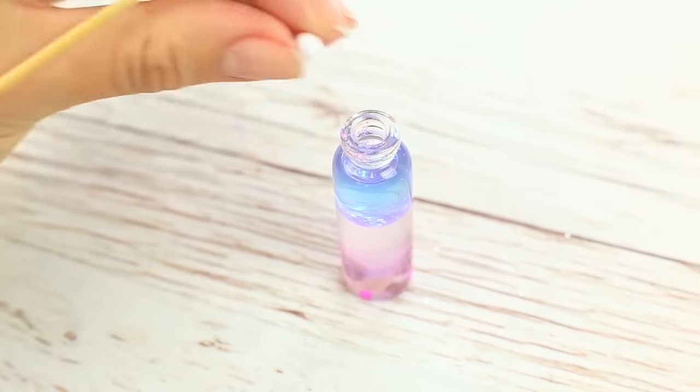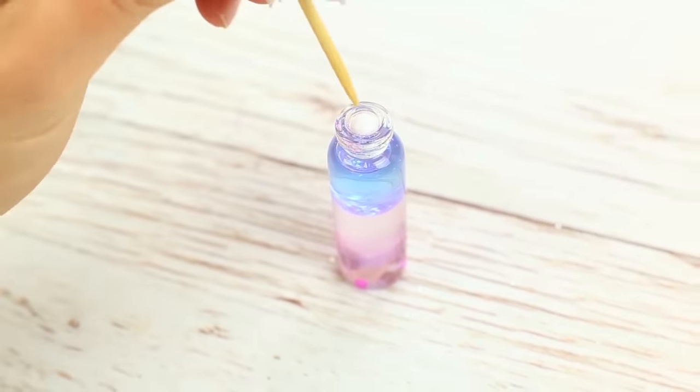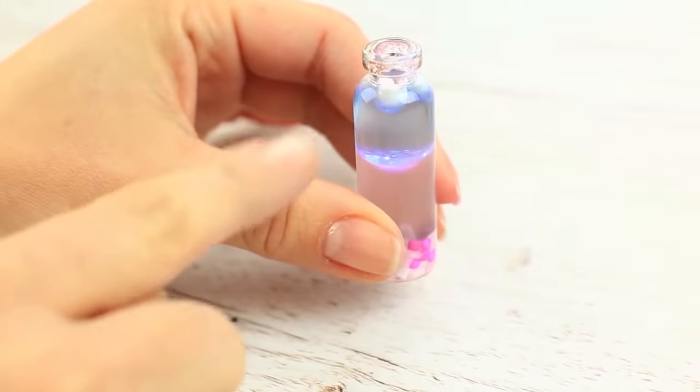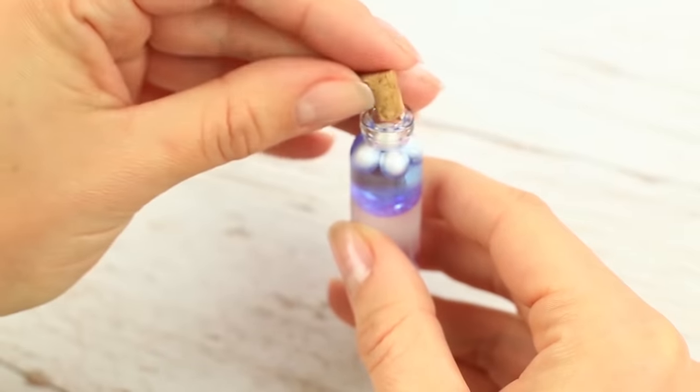If it doesn't go, use a wooden stick or some other tool. Foam plastic is lighter than any liquid, so the balls don't sink but float on the surface. Cork the vial. You can glue it to make sure it won't open.